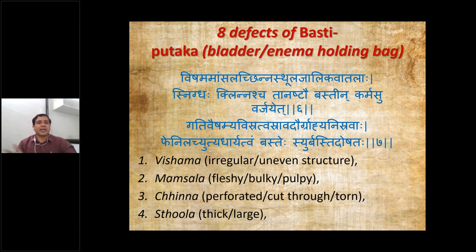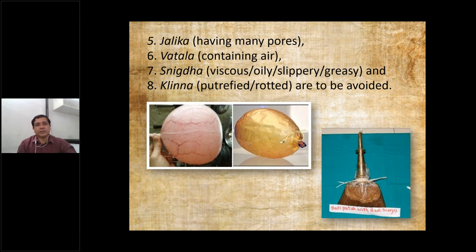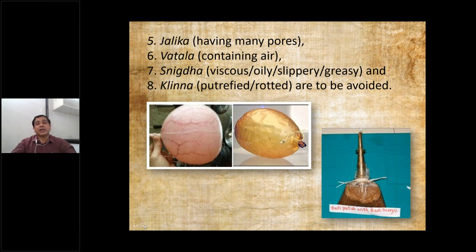The defects of Basti Putak are: Vishama — irregular or uneven structure; Mausala — very fleshy, bulky, or pulpy; Chinna — perforated, cut through, or torn; Sthula — thick or large; Jalika — having many pores; Vatala — containing air (there should be no air in the bag); Snigdha — viscous, oily, slippery or greasy; and Klinna — putrefied, rotted, with bad smell. That last defect should not be there as it may create infection.